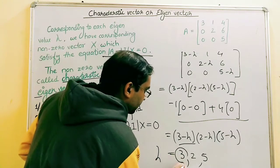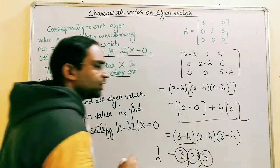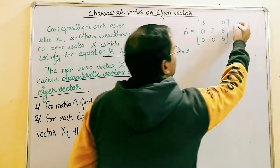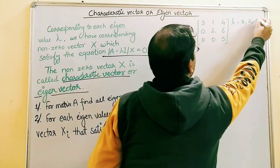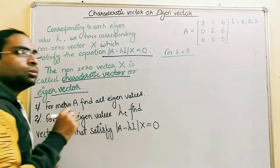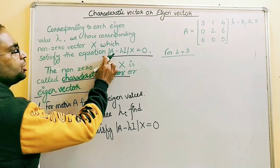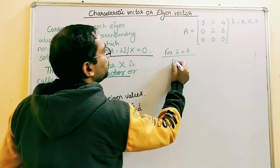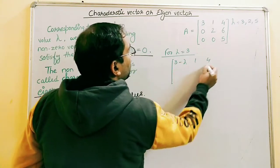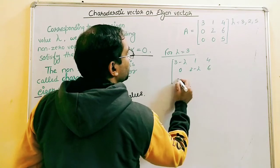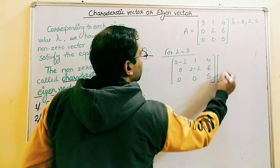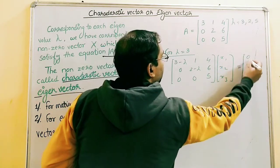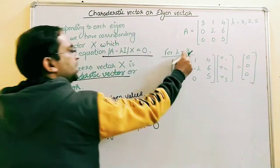For each eigenvalue we need to find the eigenvector. Starting with lambda equals 3: we write (A minus lambda I)x = 0, substituting lambda = 3. The matrix entries become 3-3=0, 2-3=-1, and 5-3=2. So the matrix is [0, 1, 4; 0, -1, 6; 0, 0, 2] times [X1, X2, X3]^T = [0, 0, 0]^T.